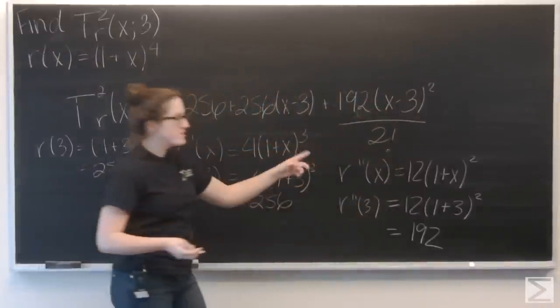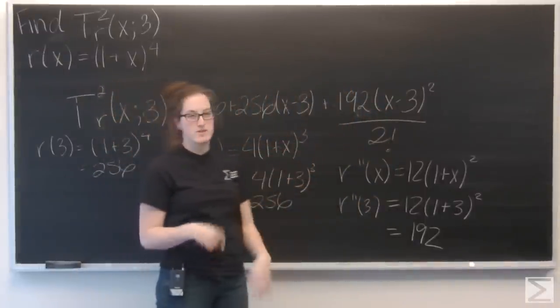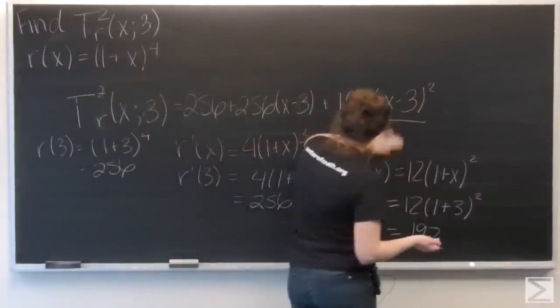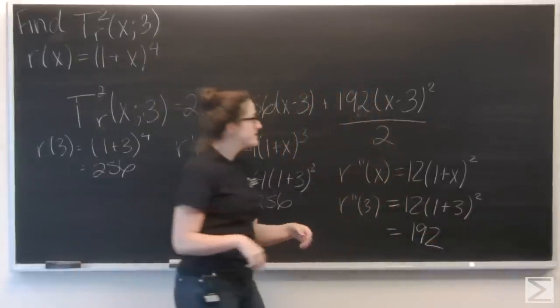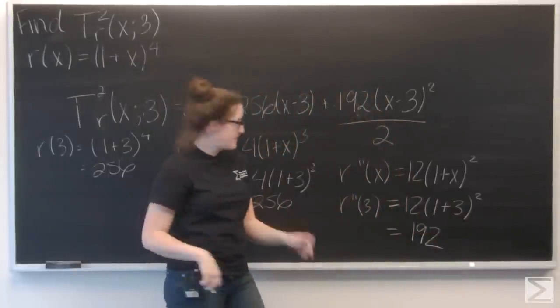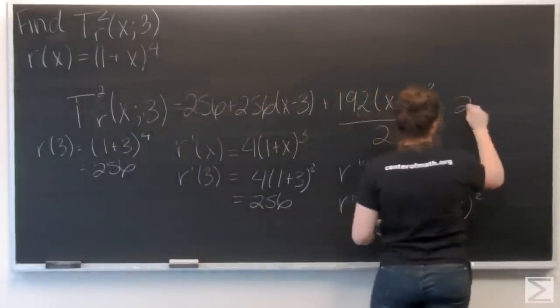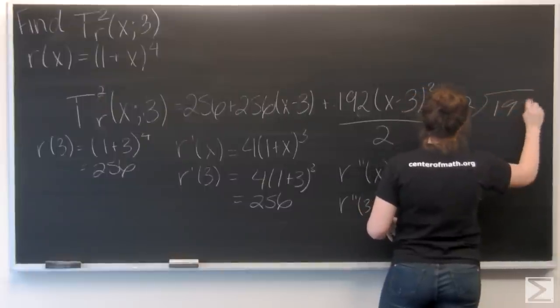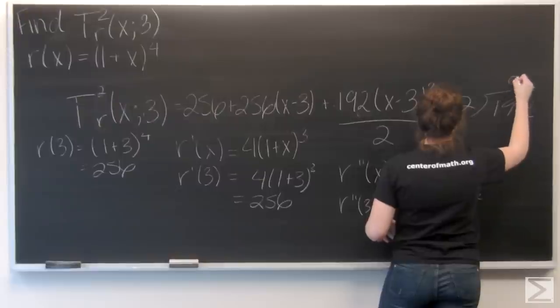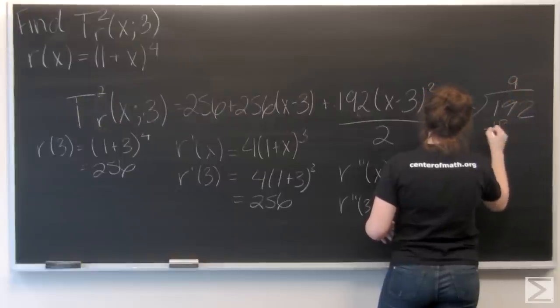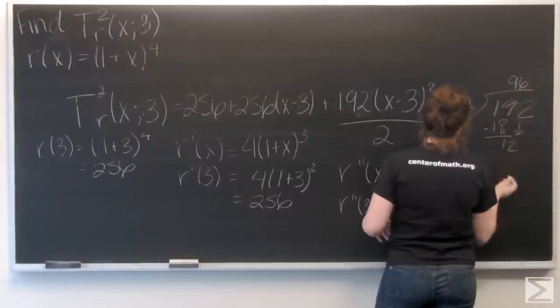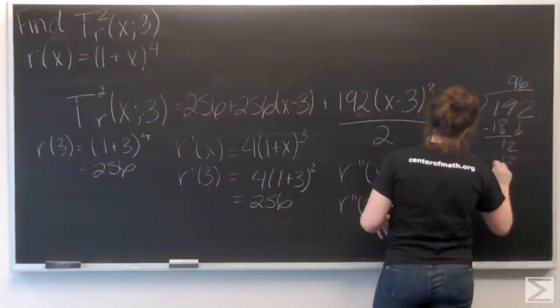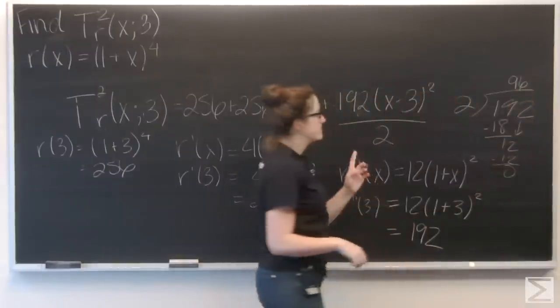So now let's simplify this a little bit. I know 2 factorial is really just 2, so let's divide 192 by 2. So we're going to get 96.